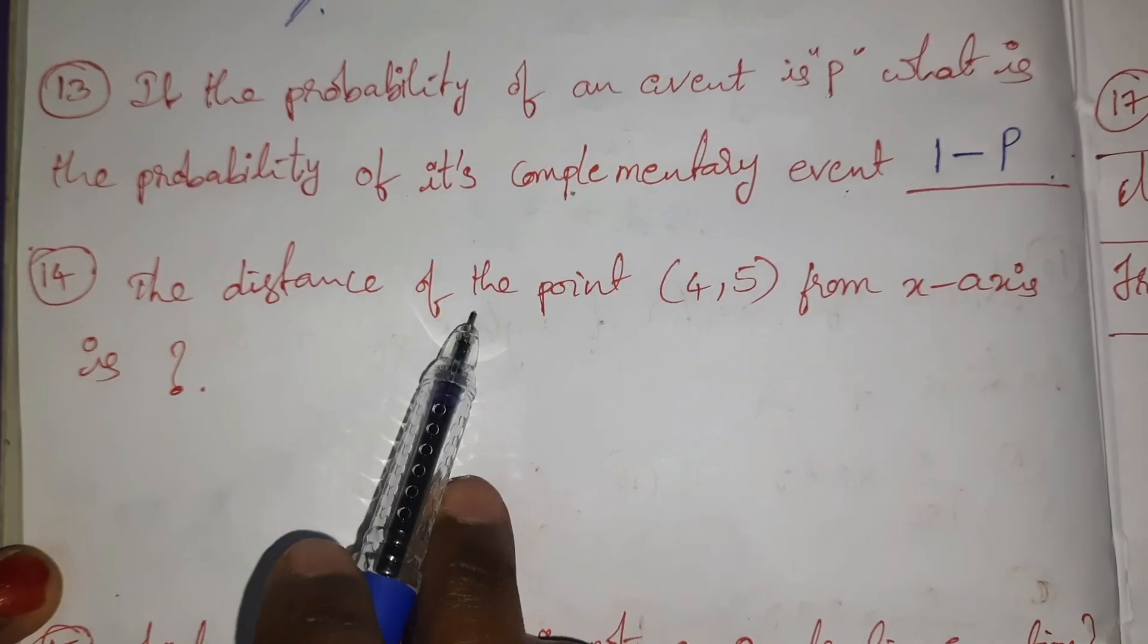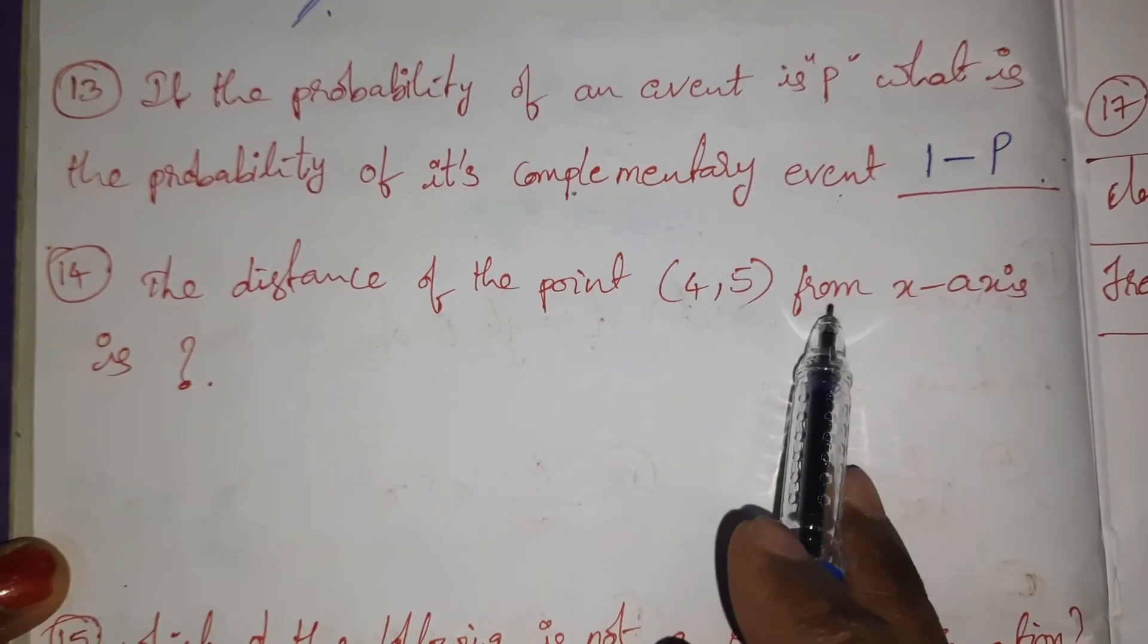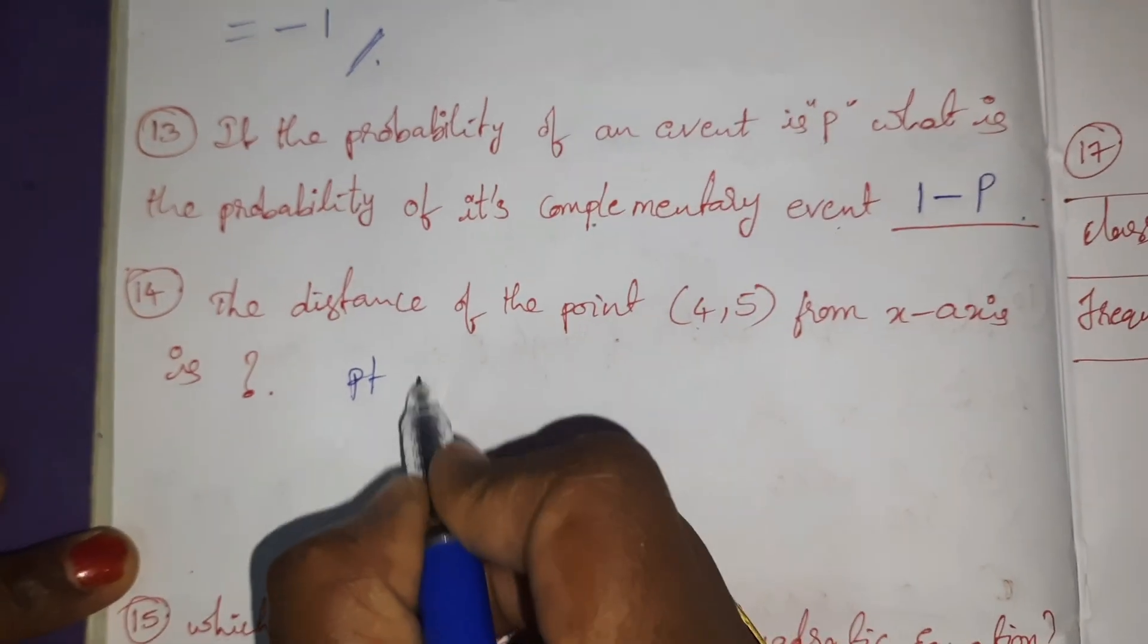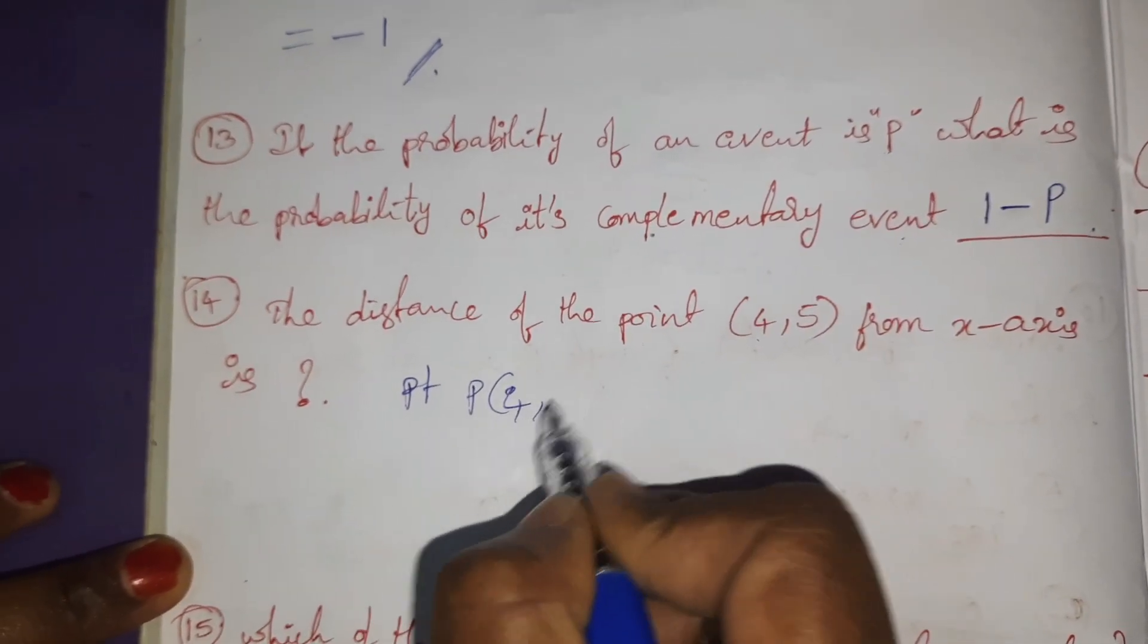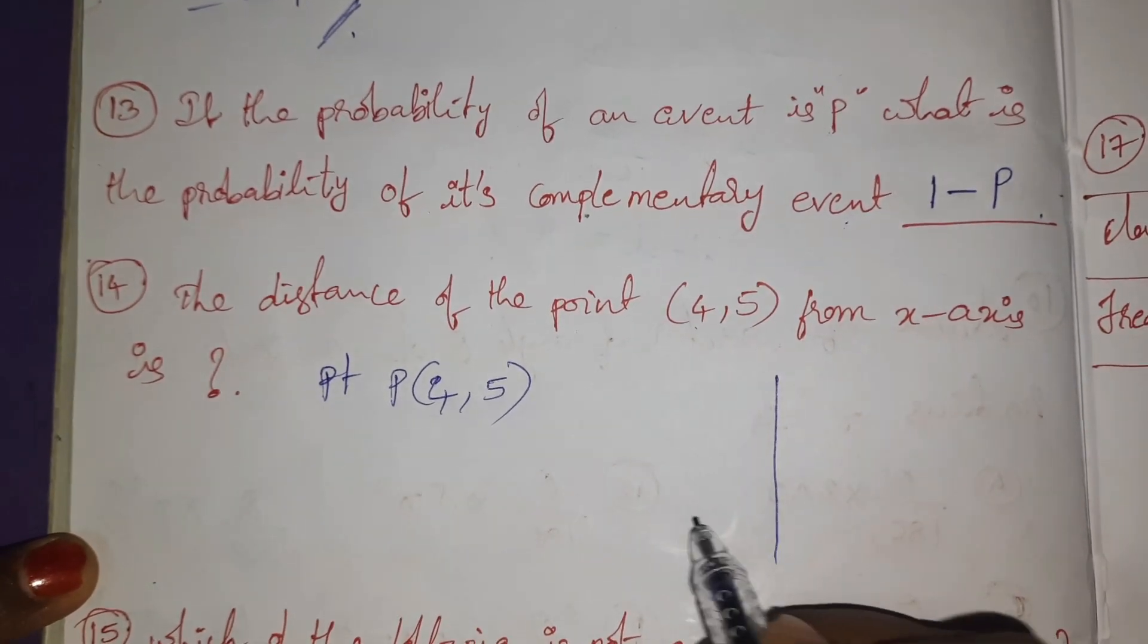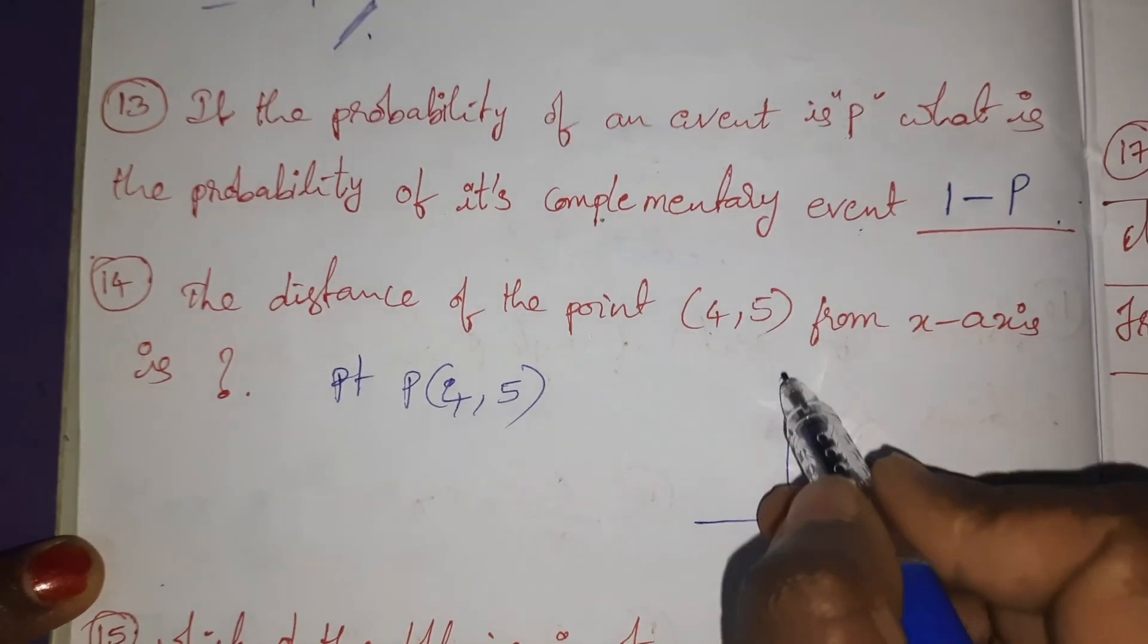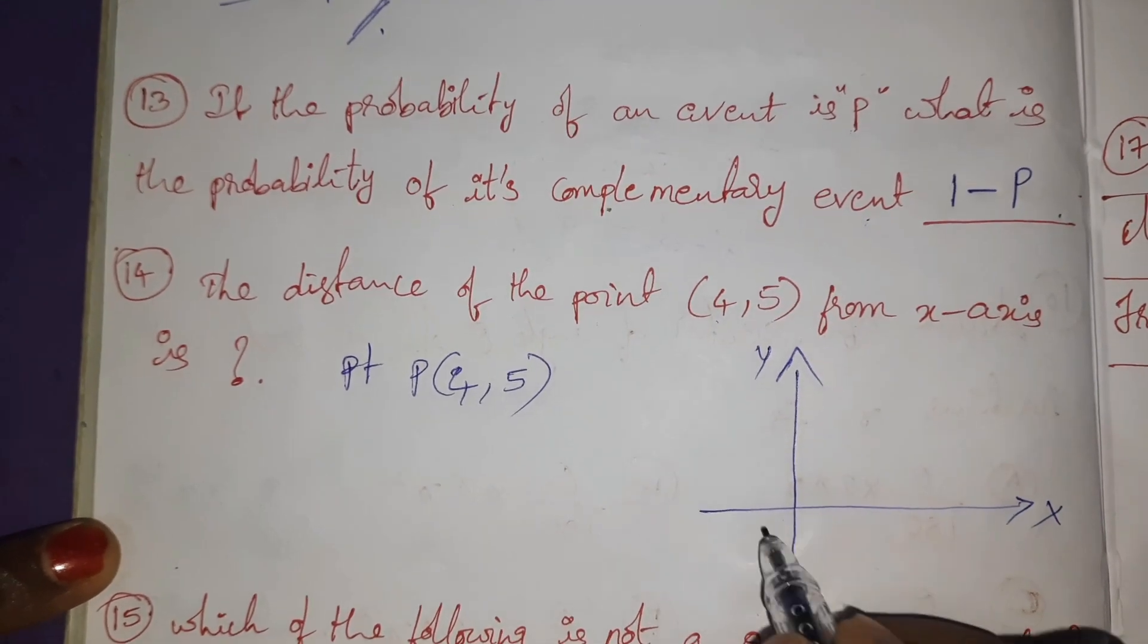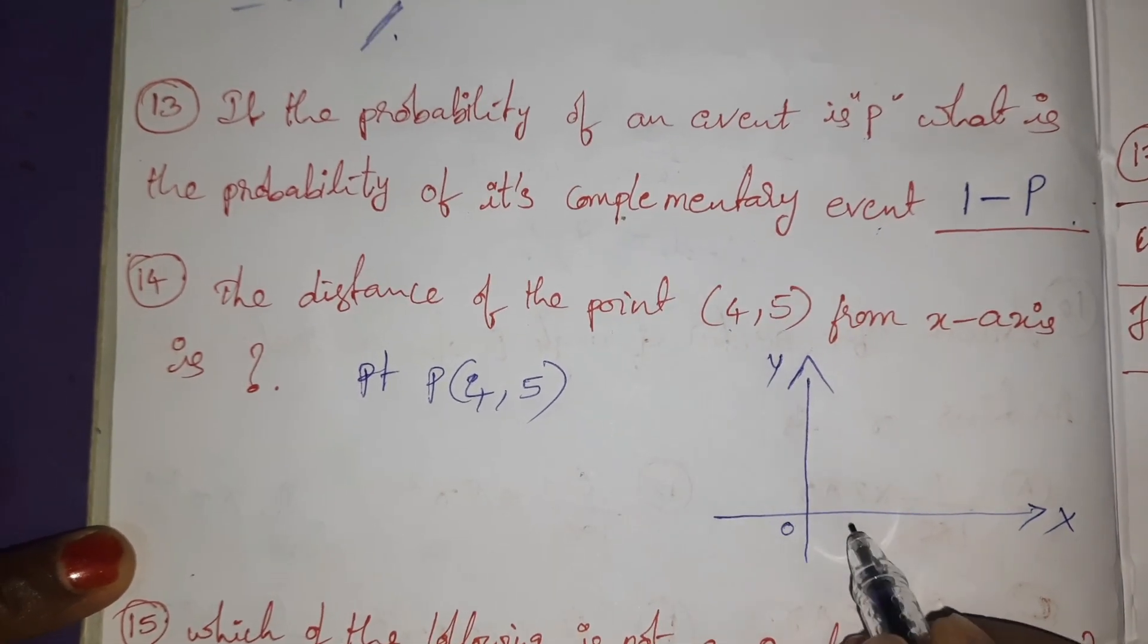The distance of the point (4, 5) from x-axis is... So given point is (4, 5). According to the geometry: x-axis, y-axis.